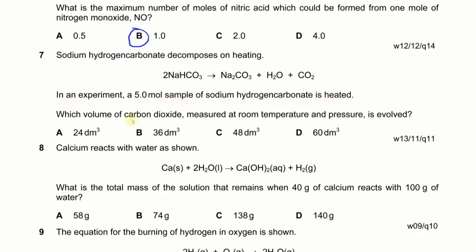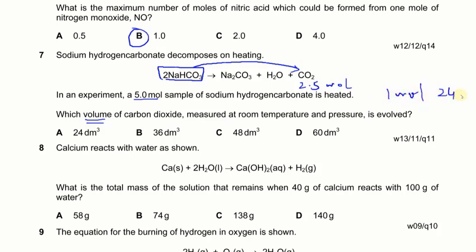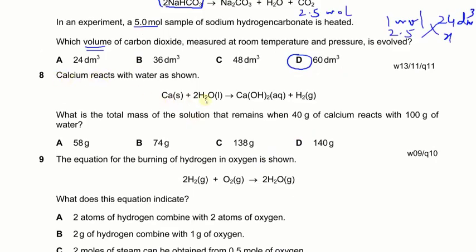Next: sodium hydrogen carbonate decomposes on heating. In an experiment, 5 moles of NaHCO₃ are heated. What volume of CO₂ is evolved? According to the equation, 5 moles of NaHCO₃ gives half that amount of CO₂, which is 2.5 moles. One mole of any gas occupies 24 dm³ at RTP, so 2.5 × 24 = 60 dm³.